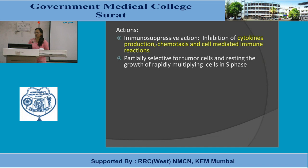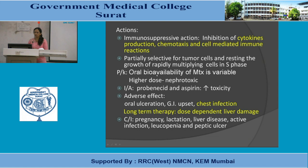The actions of methotrexate include immunosuppressive activity, inhibition of cytokine production, inhibition of chemotaxis and cell-mediated immune reactions, and partial selectivity for rapidly multiplying cells in the S phase of the cell cycle. Oral bioavailability is variable; at higher doses it acts as a nephrotoxic agent, so renal function should be assessed before prescribing.